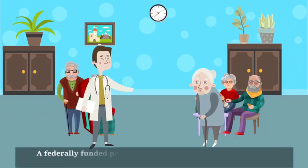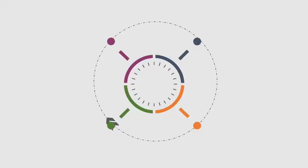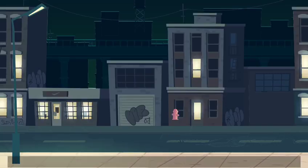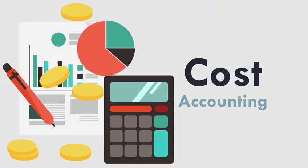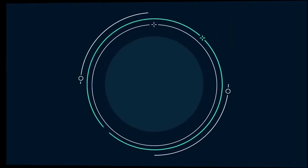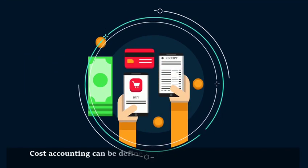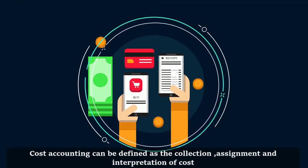Medicare is a federally funded program that provides health insurance to Americans at age 65. Medicaid is a federal and state health insurance program for people with a low income. Cost accounting can be defined as the collection, assignment, and interpretation of cost.